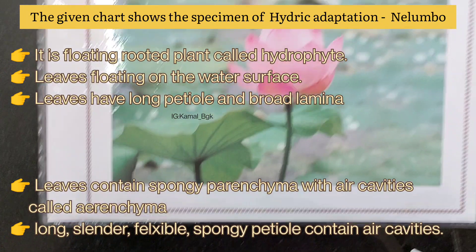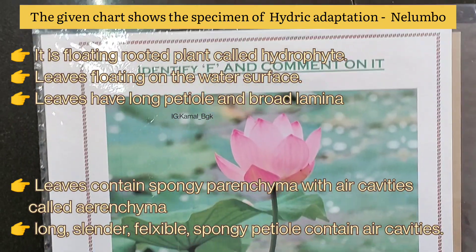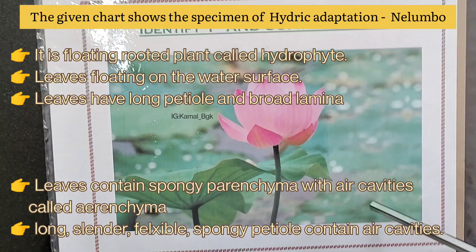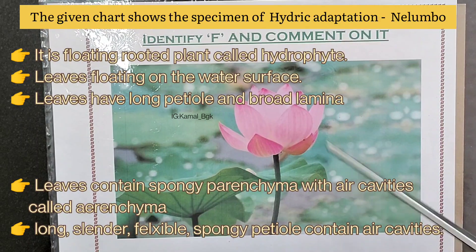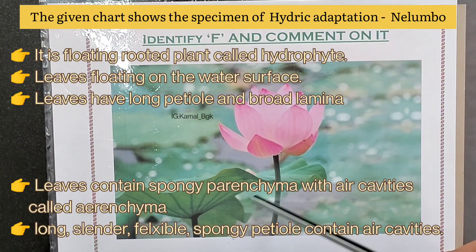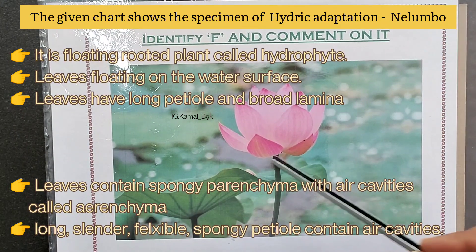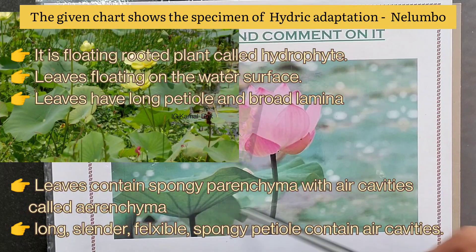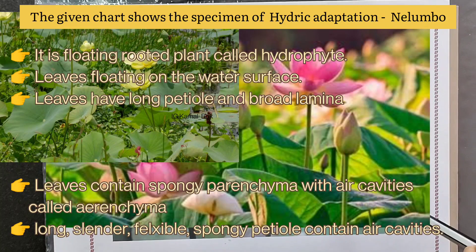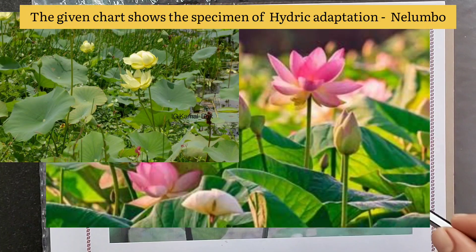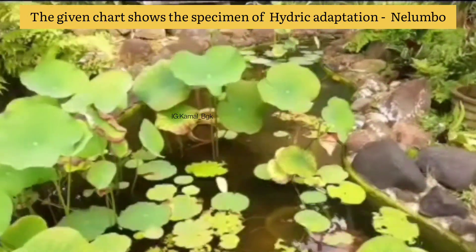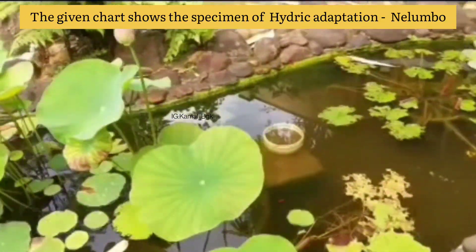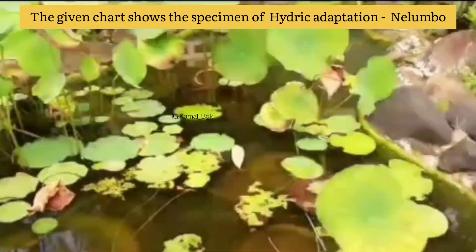The given chart shows the specimen of hydric adaptation called Nelumbo. This is the Indian lotus flower. It is a floating-rooted plant — a hydrophyte. Leaves float on the water surface and have long petioles and broad lamina. Leaves contain spongy parenchyma with air cavities called aerenchyma. The long slender flexible spongy petiole contains air cavities which help the plant to float on the water surface, and the broad lamina holds the water current, providing buoyancy to the lotus plant.